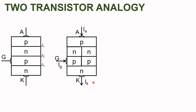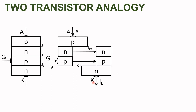Let us separate out these two transistors and see how the structure looks. We have separated the two transistors. Junctions will remain the same. Junction J1 will be here, junction J2 will be common for both transistors, and junction J3 will be here. So we now have two transistors — one PNP and another NPN — connected to each other.